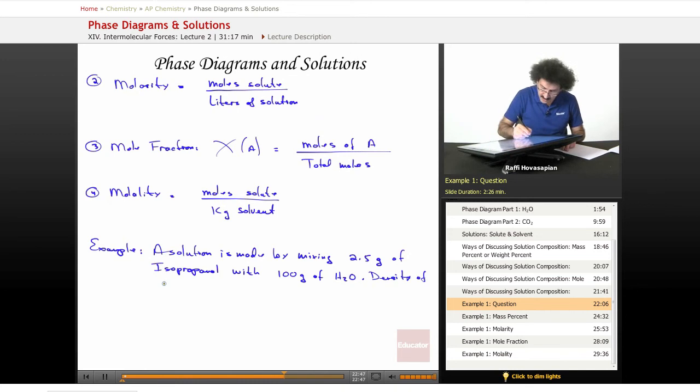The density of C3H8O is 0.786. The C3H8O is the isopropanol, which by the way looks like this in case you want the structure. There's another H here.